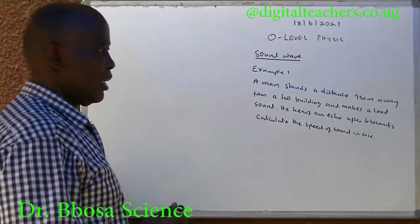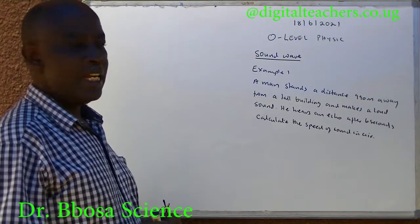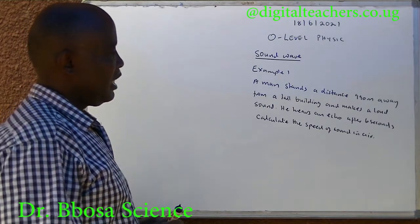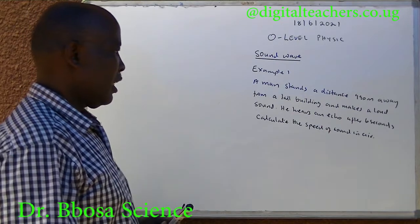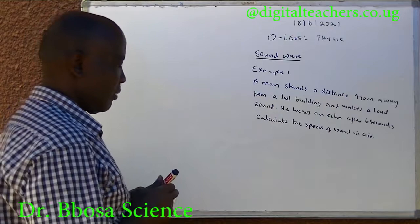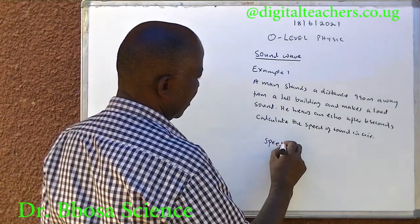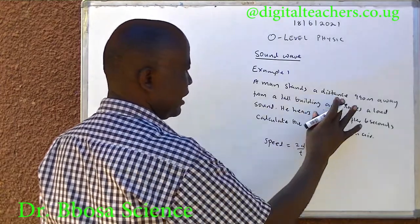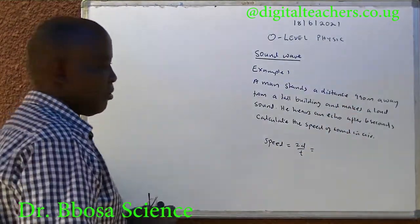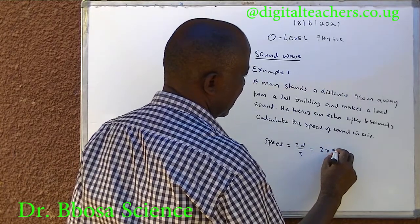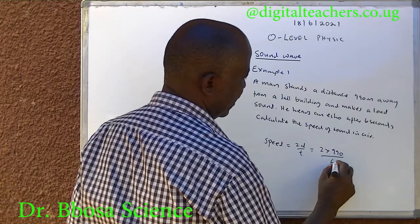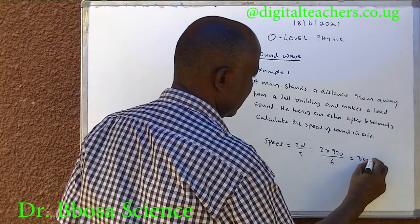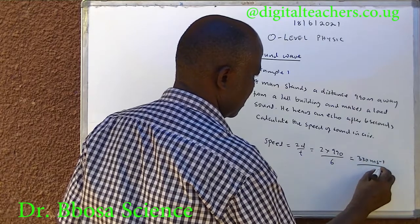Example 1: A man stands a distance of 990 meters away from a tall building and makes a loud sound. He hears an echo after 6 seconds. Calculate the speed of sound. Speed equals 2D over T, where D is the distance of the man from the wall. So it is equal to 2 times 990 over 6, which is equal to 330 meters per second.